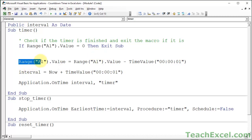So what we're doing here is we are saying, hey, I want to set the cell that has the timer in it equal to its current value minus one second.